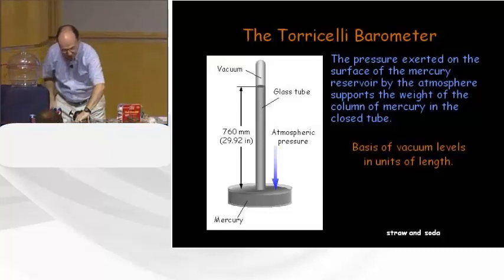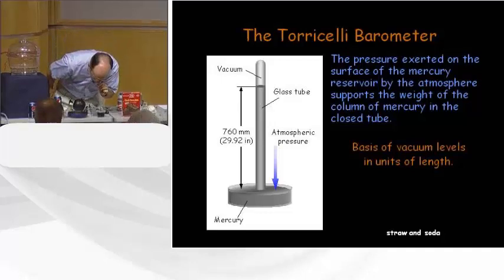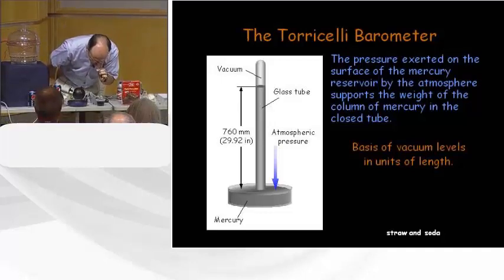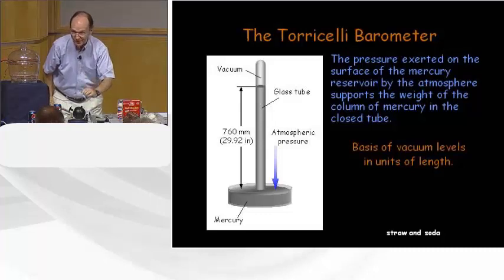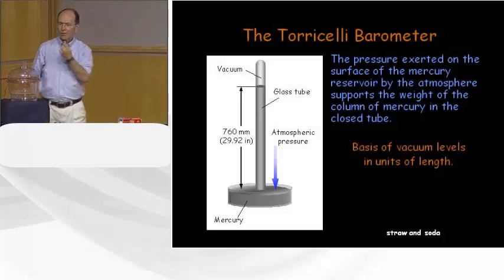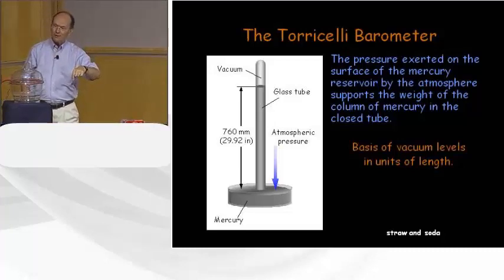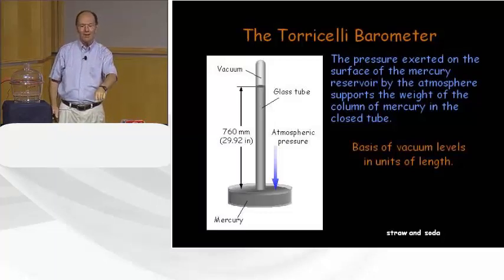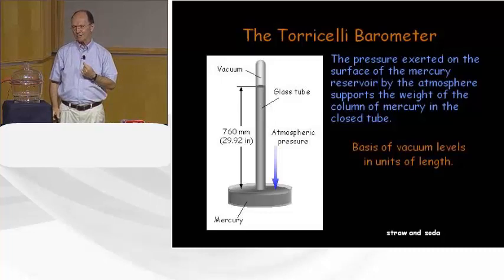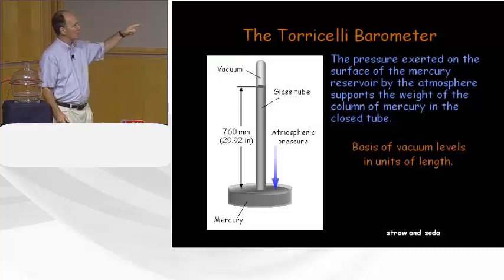With a straw, I can draw the beverage into my mouth — but I said that incorrectly. We say we sucked on the straw; in reality, we create a partial vacuum and atmospheric pressure does all the work of forcing the liquid up the straw into our mouths. If you do that on the space station, it doesn't work because there's not enough gravity — it's atmospheric pressure, just like in the barometer, that forces the liquid up the straw.